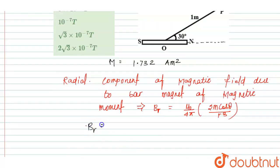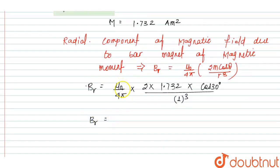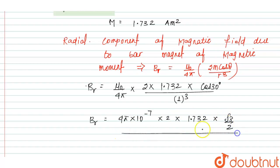The value of Br is equal to mu0 upon 4pi into 2 into m, where m is given as 1.732, into cos theta, and theta is equal to 30 degrees. That means cos 30 degrees upon r cubed, and the value of r is given as 1 meter, that means 1 cubed.